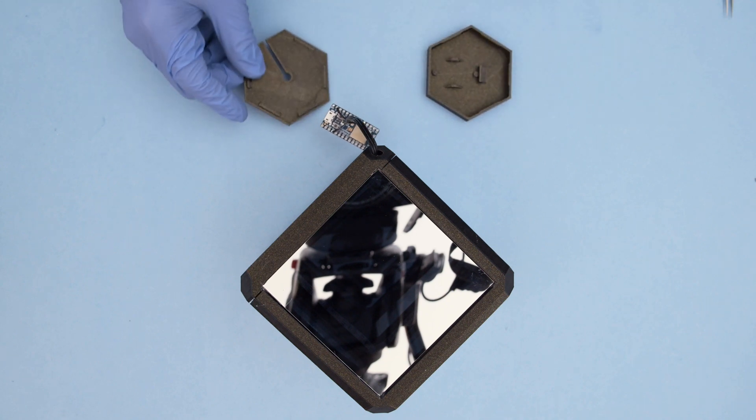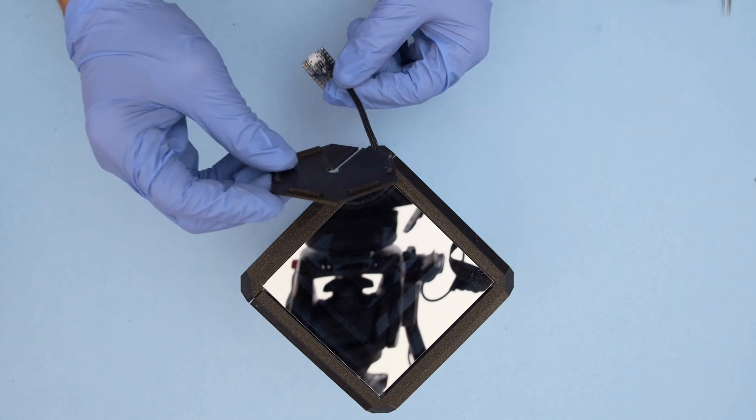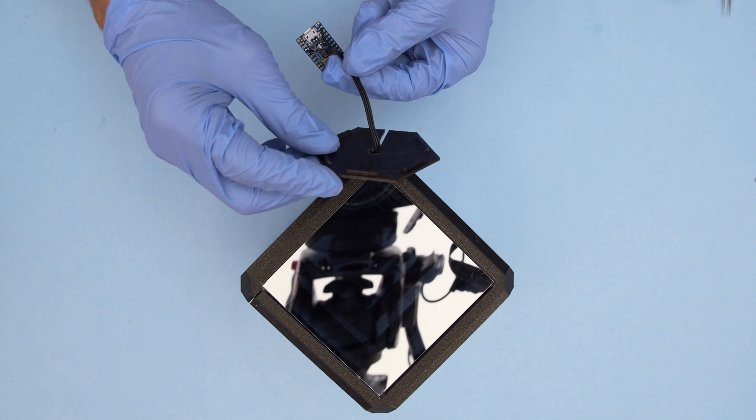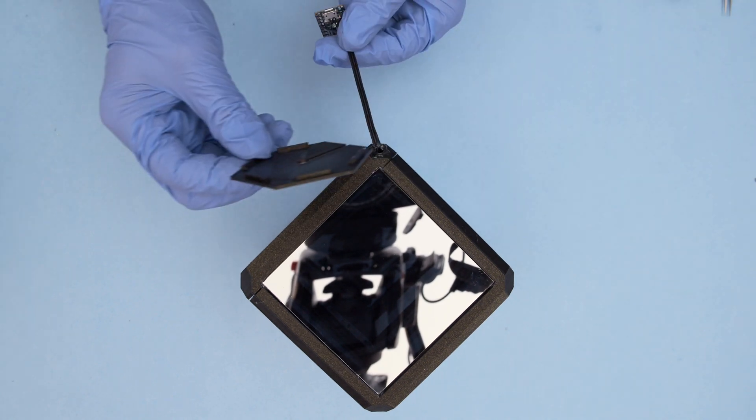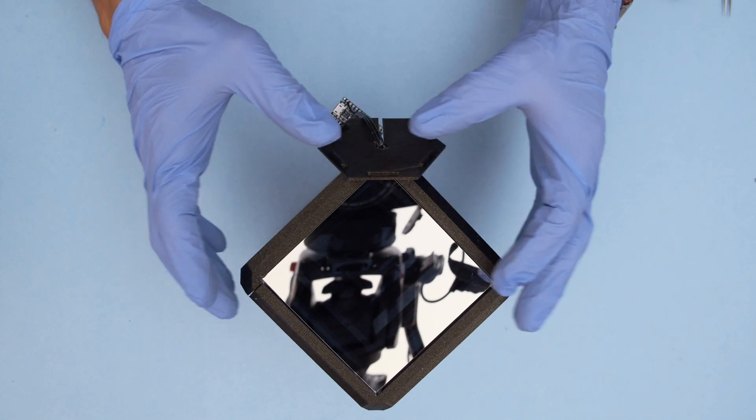Once all six panels have been hot glued in place we can then fit the board into the case. The cover has an opening so the cable can slip through. Add a bit of hot glue to the corner and stick the cover right on top.